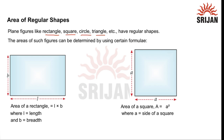For the area of a rectangle, the formula is L multiplied by B, where L is the length and B is the breadth of the rectangle. For a square, the area is A squared, where A is the side of the square. Since all sides of a square are equal, the area is simply A squared.